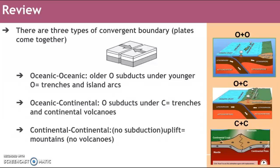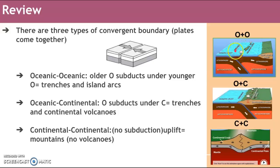There are oceanic-oceanic convergent boundaries, and that's when you see two oceanic crusts converging. The older one ends up subducting underneath the younger one, and when this happens we see trenches being formed and we also see island arcs being formed. Examples would be Japan, the Aleutian Islands, the Philippines, Indonesia, and the Caribbean.